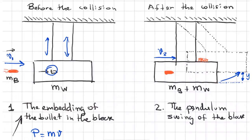Now we have the second part of the problem. In the second part, the block and the bullet move together — they are already together and they move like a single body. The only forces acting on this system are gravity and the string tensions.